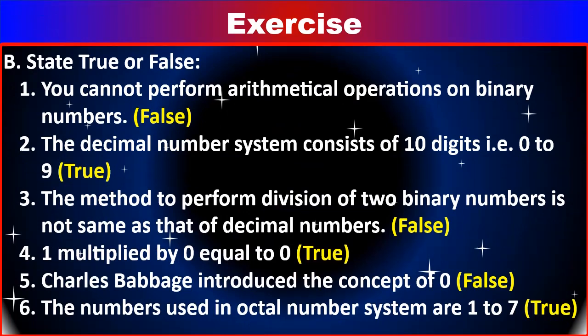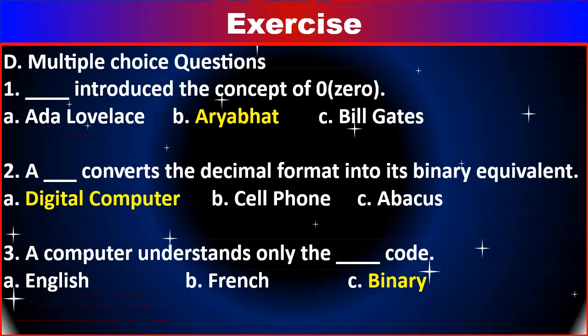True or False: (1) You cannot perform arithmetical operations on binary numbers — False, because we can. (2) The decimal number system consists of 10 digits, 0 to 9 — True. (3) The method to perform division of two binary numbers is not the same as that of decimal numbers — False, because it is the same. (4) 1 multiplied by 0 equals 0 — True. (5) Charles Babbage introduced the concept of zero — False, because Aryabhata introduced the concept. (6) The numbers used in octal number system are 1–7 — True.